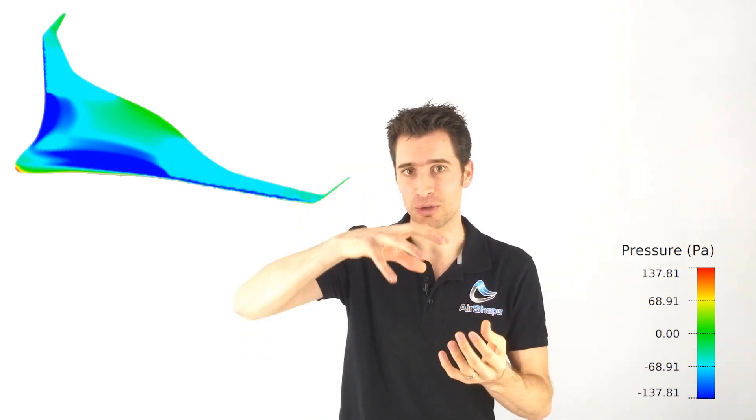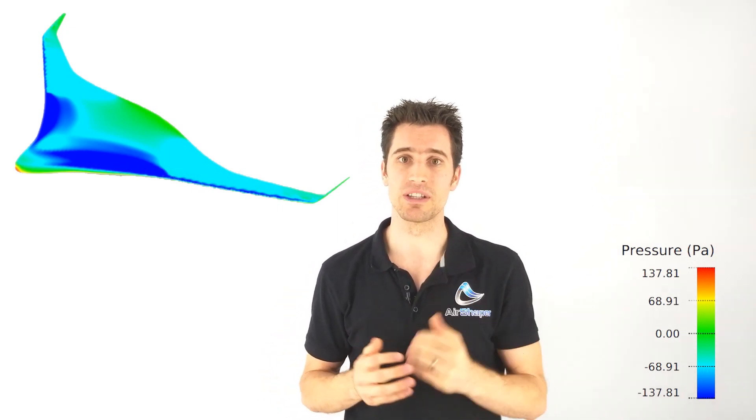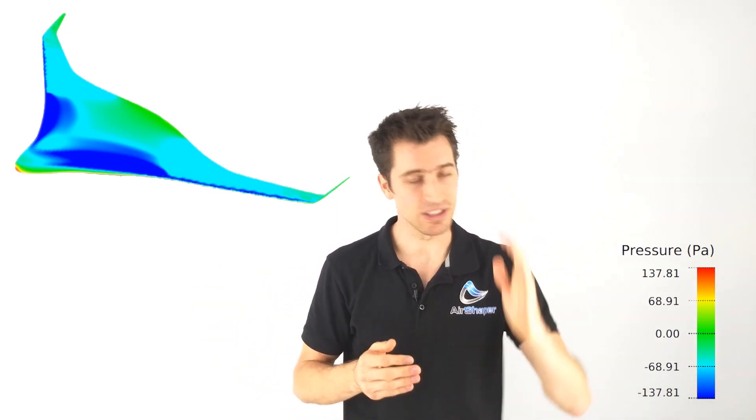We can also see this reflected in the surface pressure map. For a wing to function properly, we need high pressure at the bottom surface and low pressure at the top surface. In this case, we see that around the central parts of the wing, the air speeds up after the leading edge, creating a low pressure and thus increasing lift. At the outer parts of the wing, however, we see that right after the leading edge, the flow separates, rapidly increasing the pressure and reducing the lift.